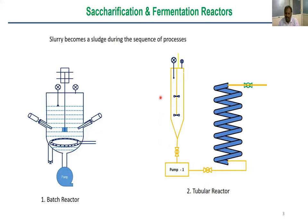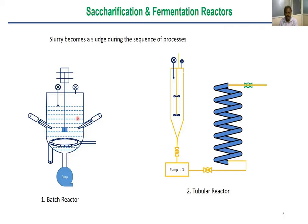For the tubular reactor, an impeller mixes the cellulose powder, biomass, water, and enzymes thoroughly, and then a pump supplies the slurry into the tube. Key design considerations include the distance from the bottom of the tank to the pump inlet — too long and conveying becomes difficult; too short and there may be space constraints for maintenance. We need to study how slurries move under impeller rotation and pump flow.